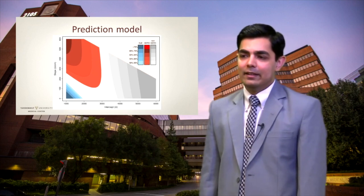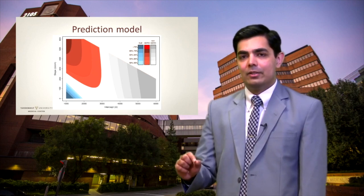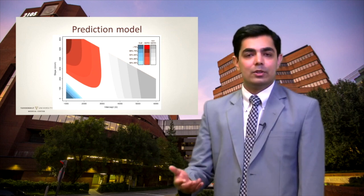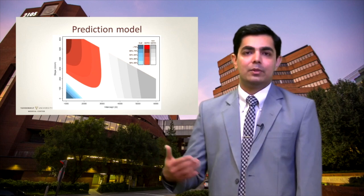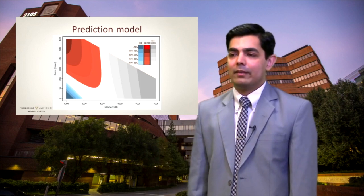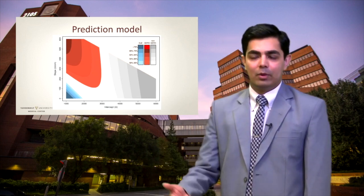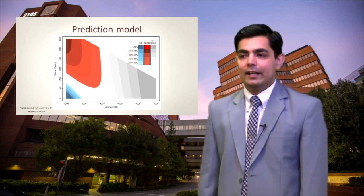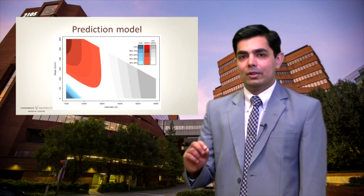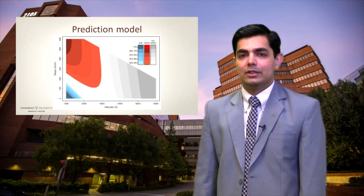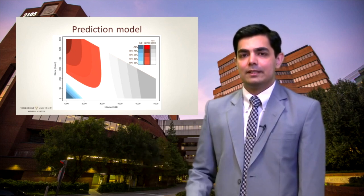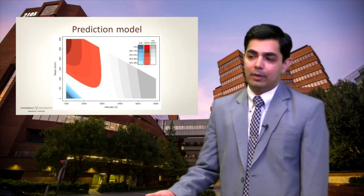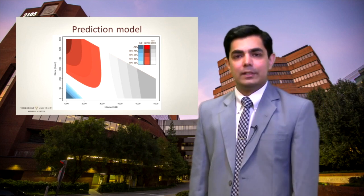As seen here in the bottom right, patients that have low MI values or low intercept close to the squamous-columnar junction and also have a low slope — meaning their MI values don't change significantly as you get farther away from the squamous-columnar junction — are more likely to have eosinophilic esophagitis. Patients with GERD, shown in red, have low MI values or low intercept closer to the squamous-columnar junction but have a greater slope, meaning their MI values rise as you get farther away. Gray represents normal patients.